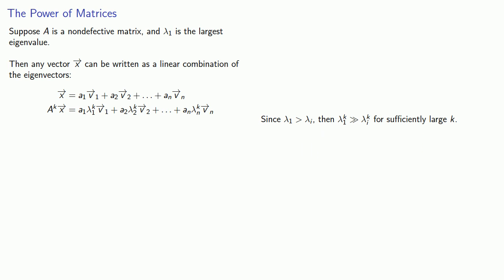So that means for sufficiently large k, this A to power k times x is approximately just this first vector. Now once more onto the breach, let's apply A again. And again, since v1 is an eigenvector for lambda 1, then Av1 is going to be lambda 1 times v1. And let's rearrange these terms a little bit.